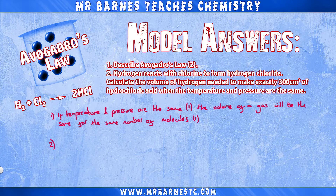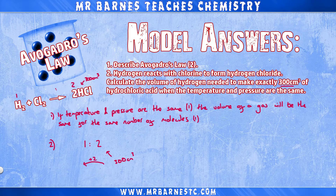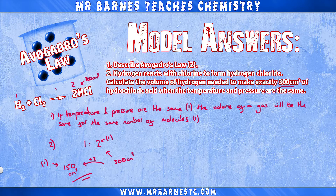Question two: hydrogen reacts with chlorine to form hydrogen chloride. Calculate the volume of hydrogen needed to make exactly 300cm³ of hydrochloric acid when the temperature and pressure are the same. I've got 300cm³ of HCl with a ratio of 1 to 2, so my ratio of 2 corresponds to 300cm³ — I need to divide by 2. So 300 divided by 2 gives me 150cm³. Normally you get one mark for the ratio and one mark for the correct answer.